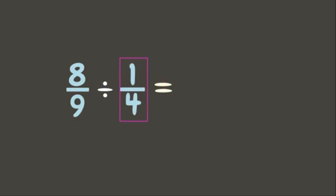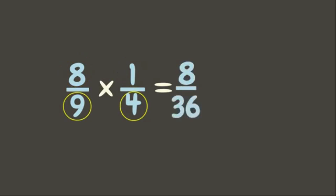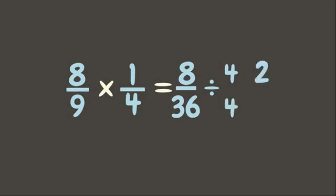Change division into multiplication and let's multiply. Eight times one is eight; nine times four is thirty-six. Let's simplify our answer. Eight and thirty-six can be divided by their common factor, four. Eight divided by four is two; thirty-six divided by four is nine. Two-ninths is our final answer.